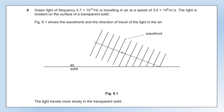Green light has a frequency of 5.7 × 10¹⁴ Hz and is travelling in air at 3 × 10⁸ m/s. The light is incident on the surface of a transparent solid. The diagram shows the wavefronts and direction of travel of the light in air. As soon as a wavefront meets the solid, it travels slower in that material and lags behind the rest of the wavefront still in air. The longer it has been travelling in the solid, the more it lags behind. I've labelled the two ends of the wavefront A and B so we can differentiate between them in the explanation.